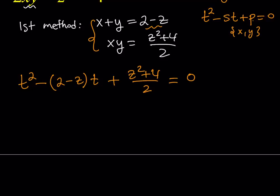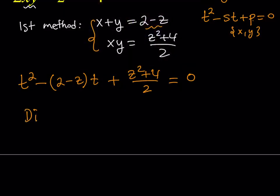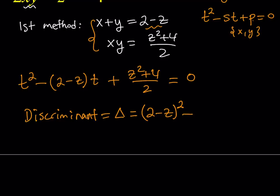I have an equation in t and I'm going to try to solve it. You can obviously use the quadratic formula or look at the discriminant. Let's go ahead and take a look at the discriminant — something interesting will happen. The discriminant, delta, is going to be b squared, which is (2 minus z) squared, minus 4ac. Since a is one, I can ignore the 4a part and just multiply by c.